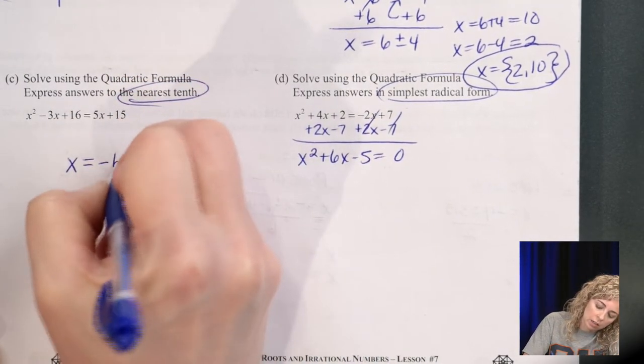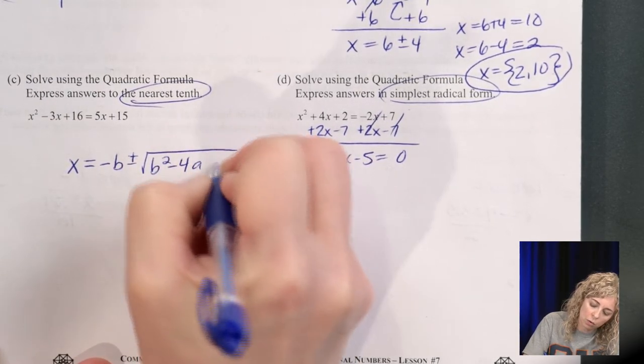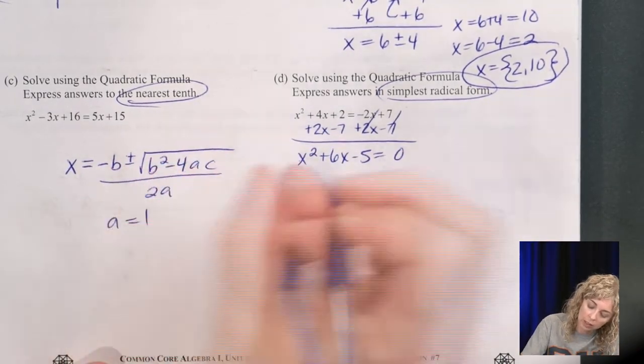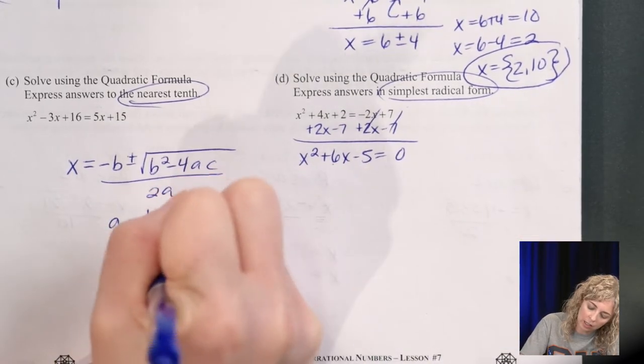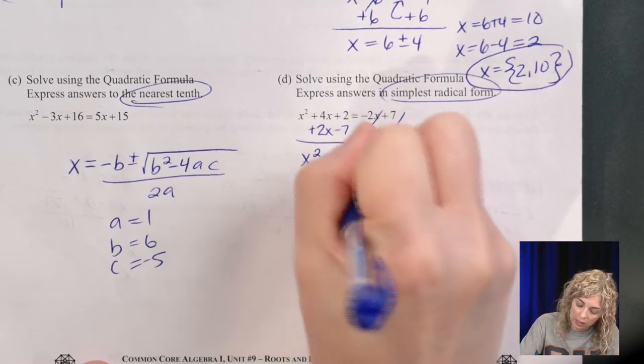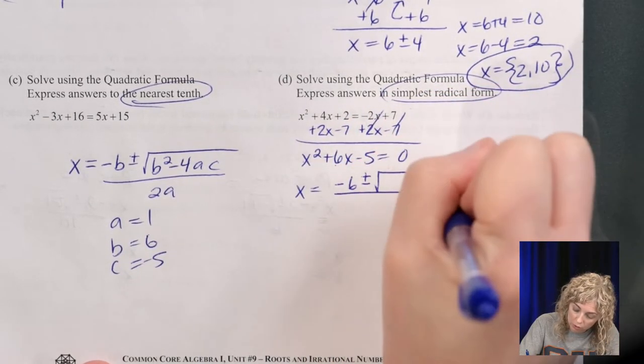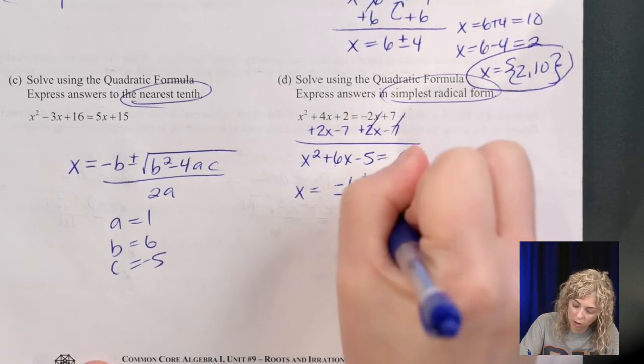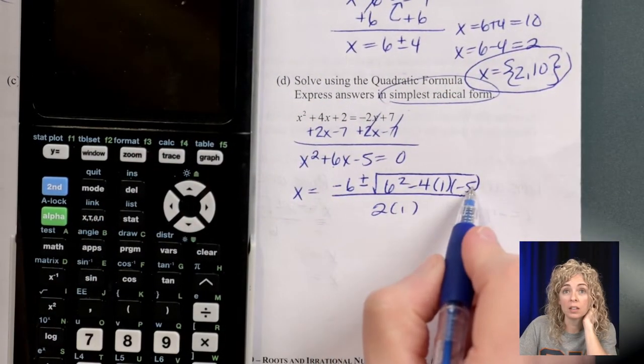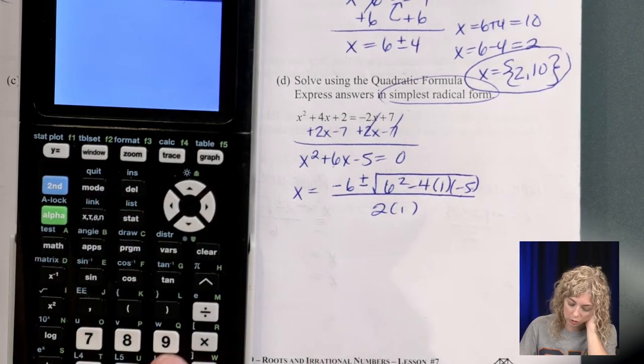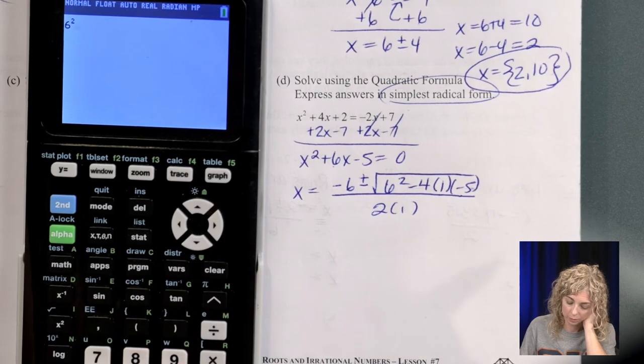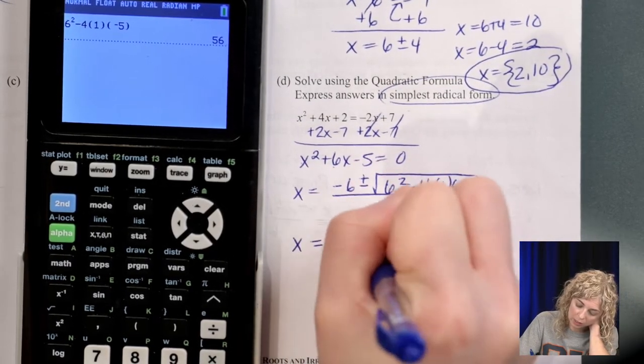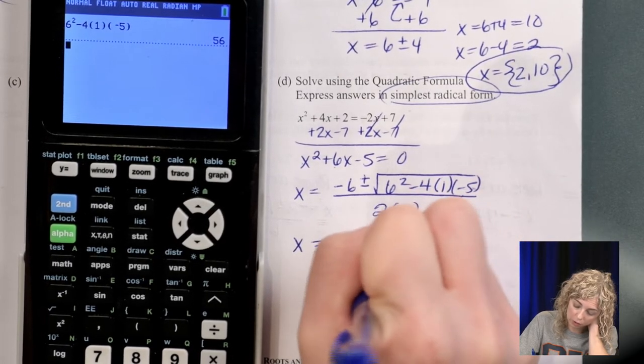is x equals negative b plus or minus the square root of b squared minus 4ac all over 2a. So our a is a 1, our b is a 6, and our c is a negative 5. So we get x equals negative 6 plus or minus the square root, 6 squared minus 4 times 1 times negative 5, 2 times 1. So now let's type all that in, because we've got to leave it as a radical, not the decimal. So 6 squared minus 4, parenthesis 1, parenthesis negative 5. So it ends up being negative 6 plus or minus the square root of 56 all over 2.